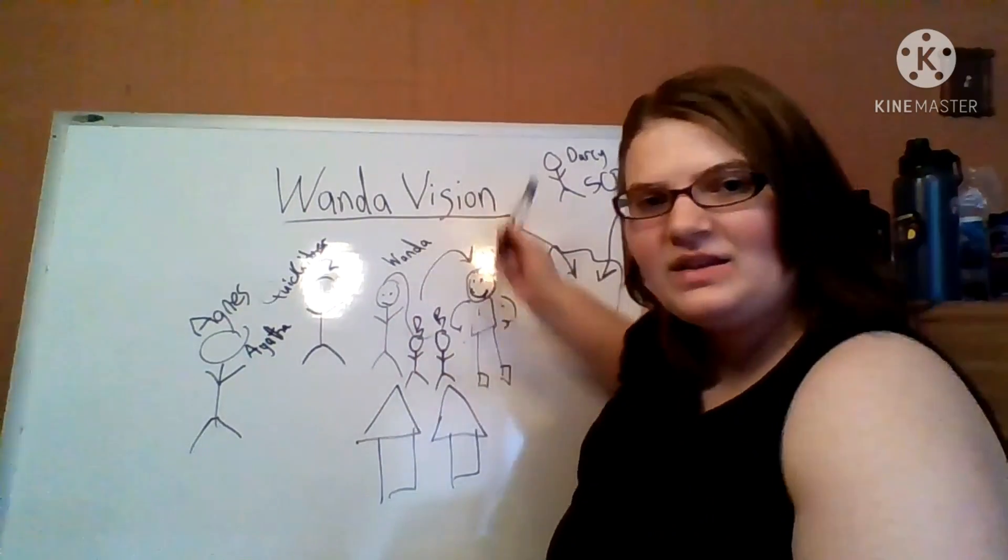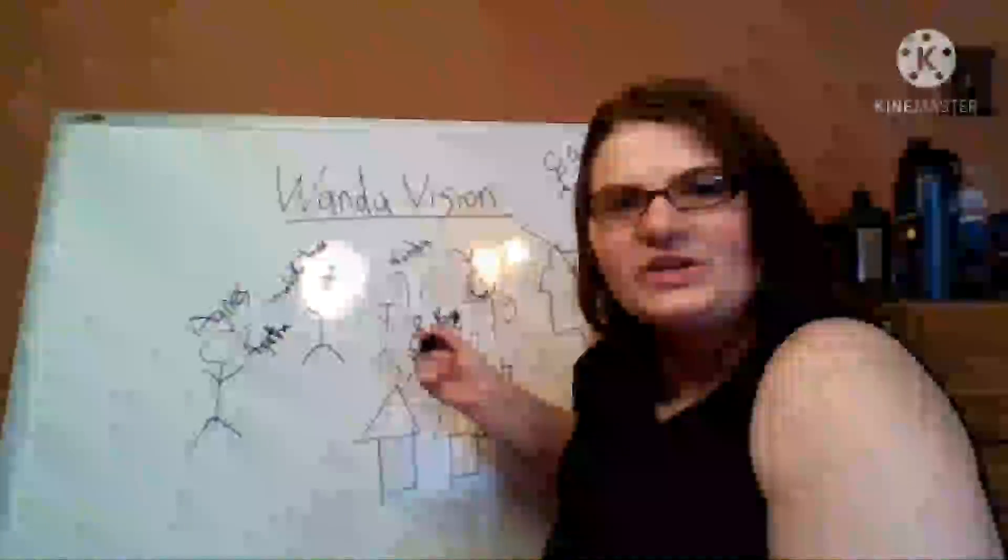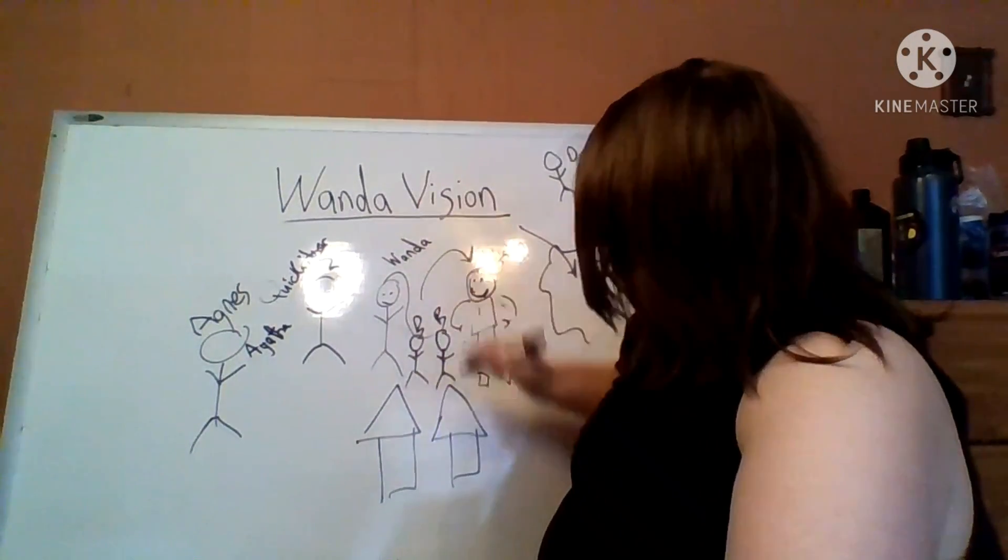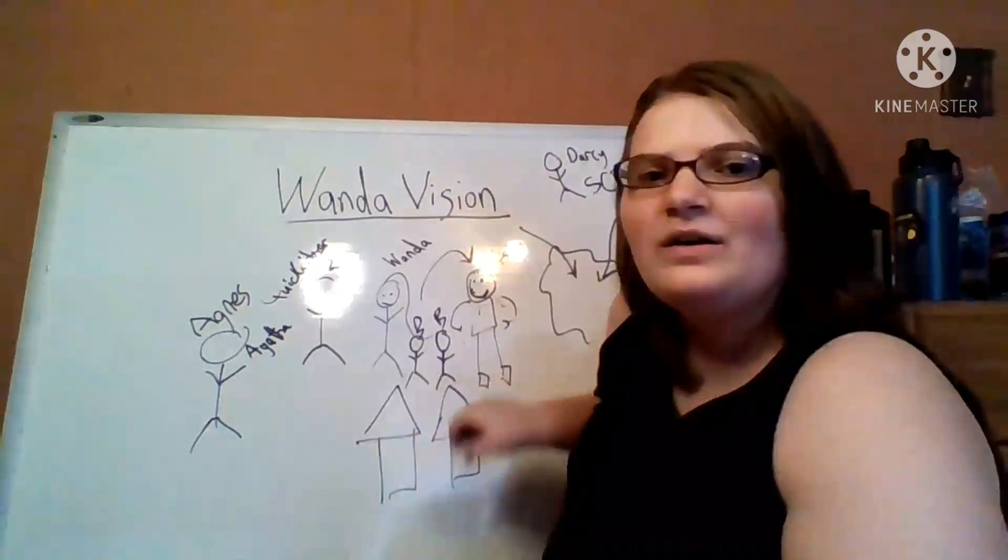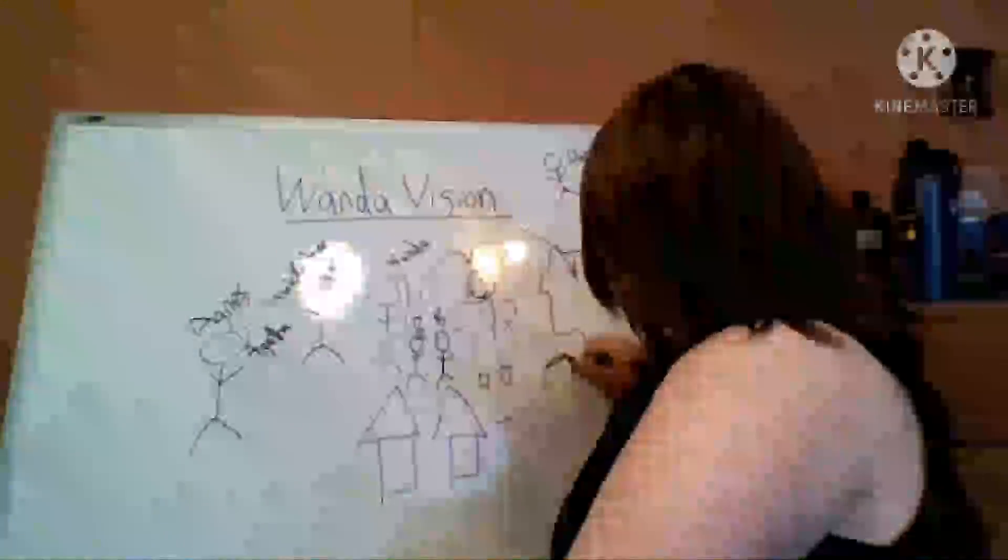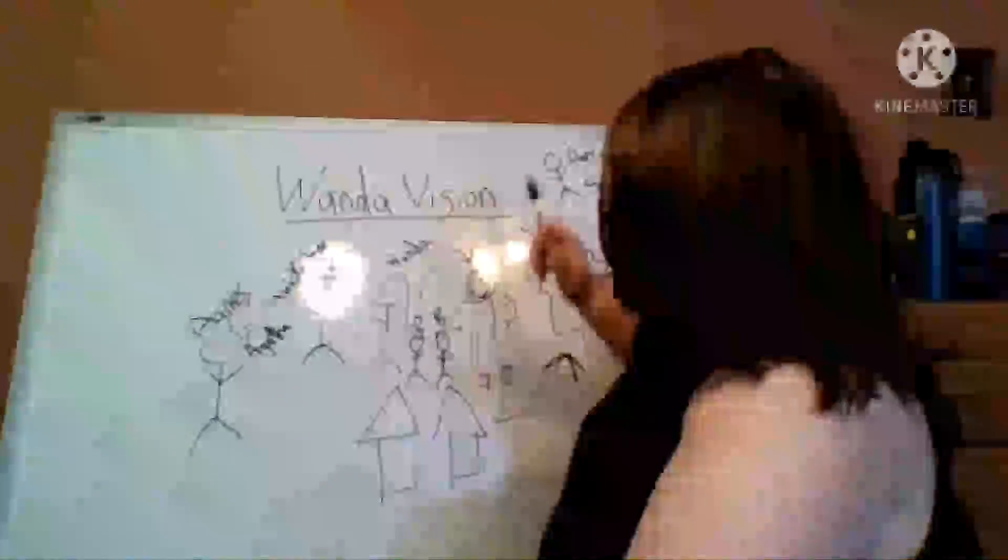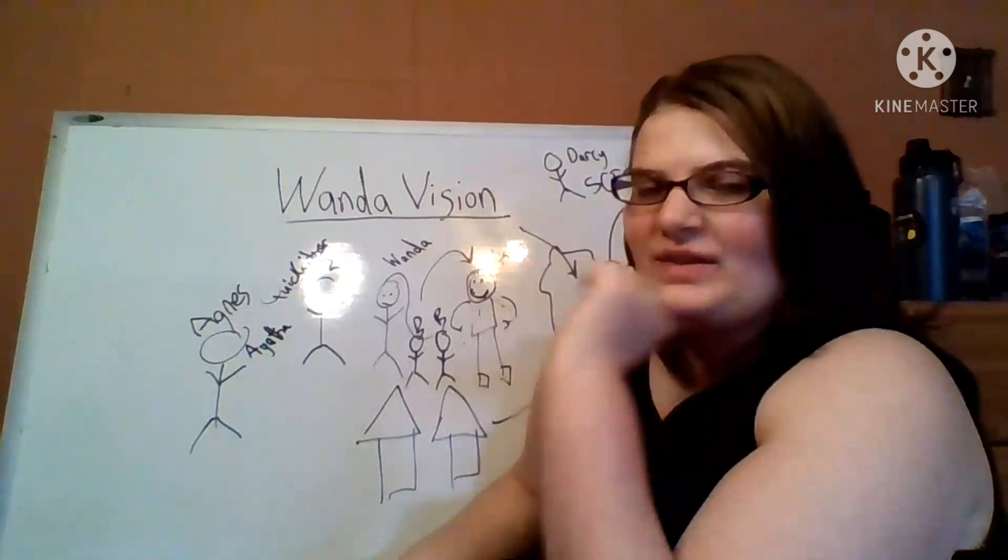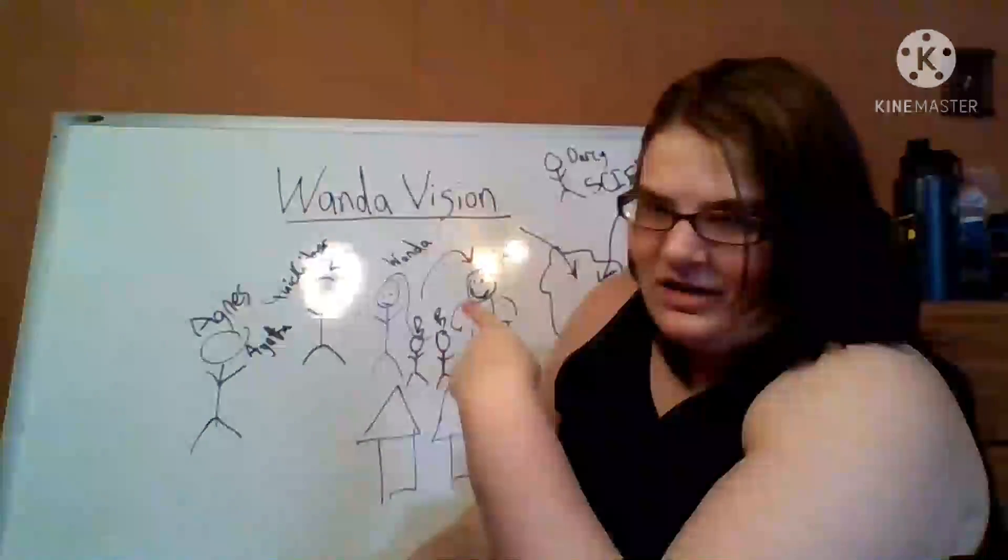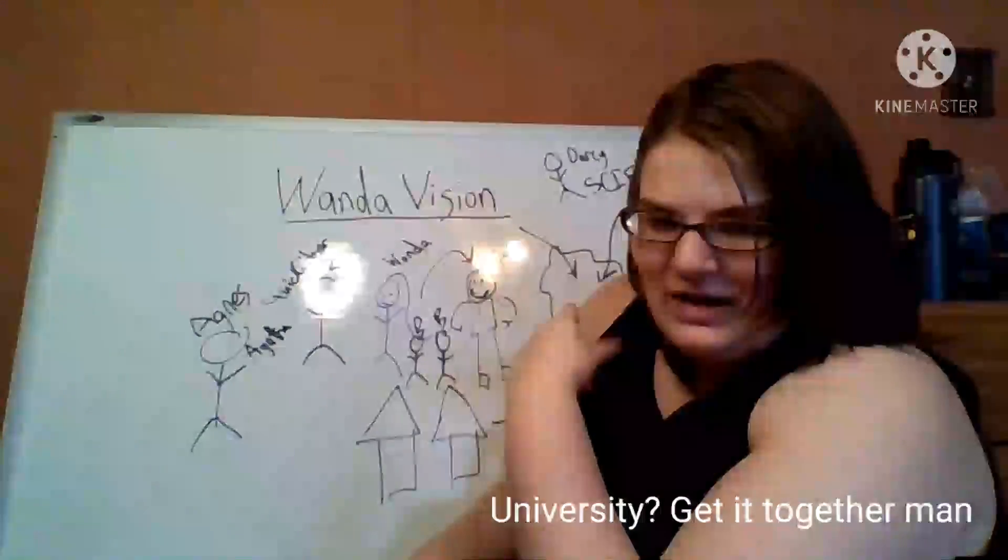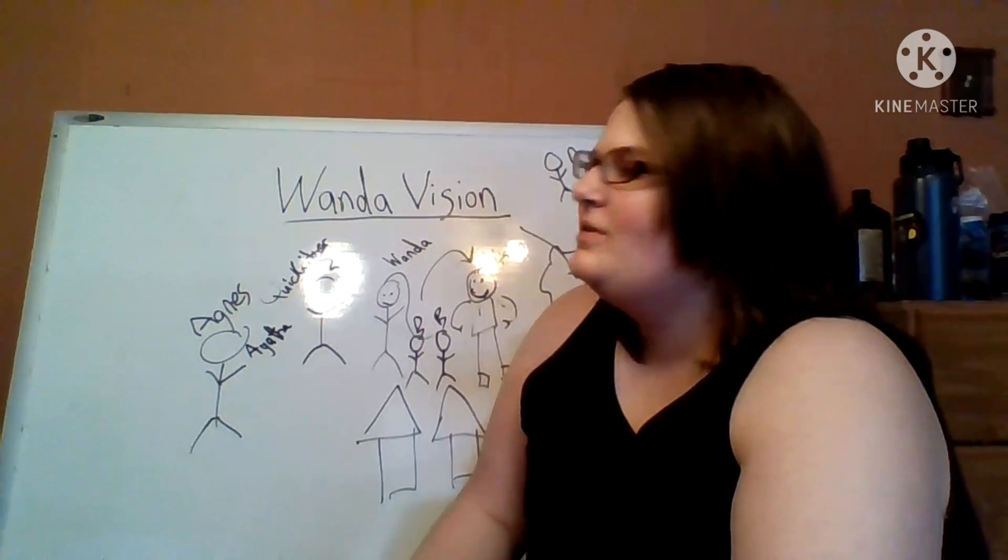Wanda is obviously grieving the death of Vision. So Wanda brings Vision back to life, or a copy of Vision. And then she tries and lives out her normal, happy life in this little town that she's enslaved. That is happening in an alternate reality where Vision never died. Then they're just trying to act like normal people. And that's where the sitcom comes in. Because this alternate reality is a sitcom universe where everything is just like a sitcom.